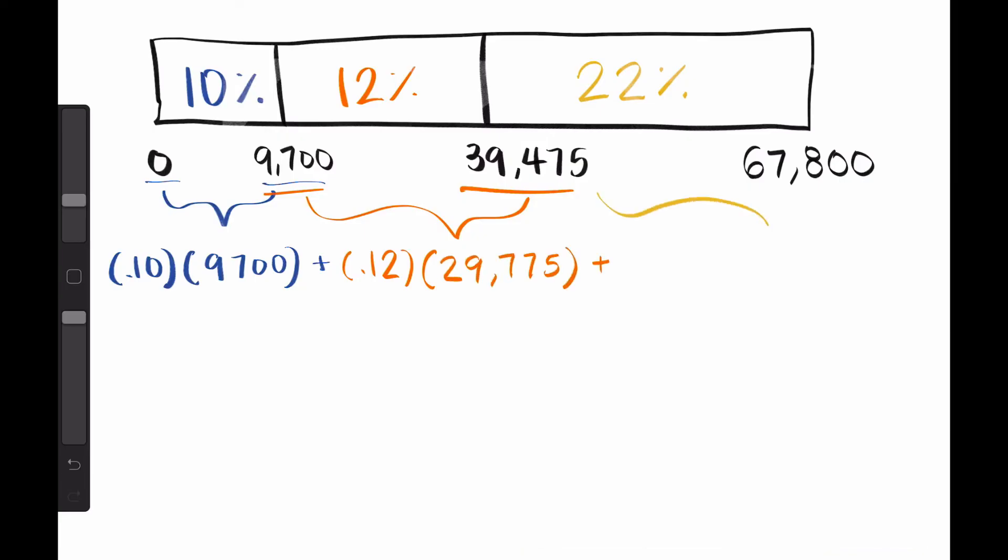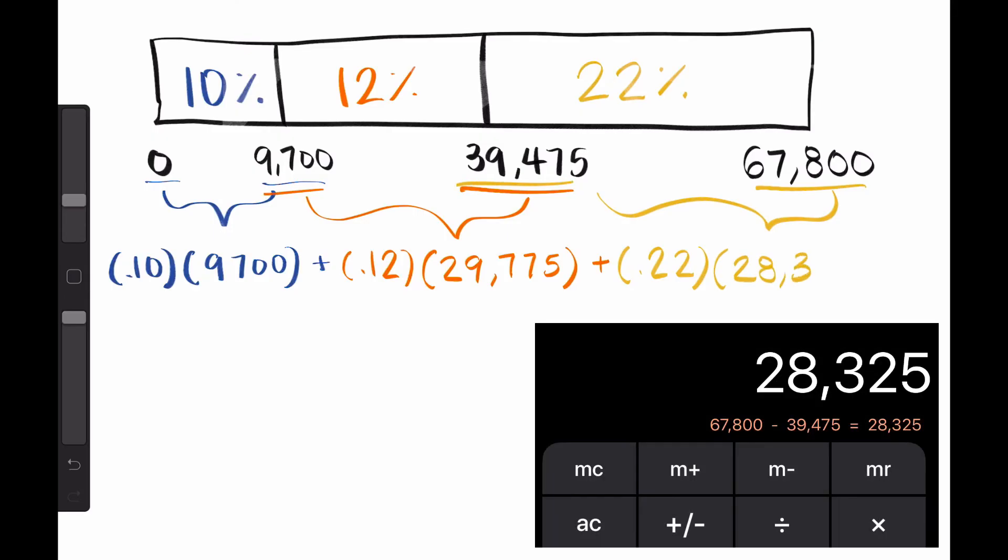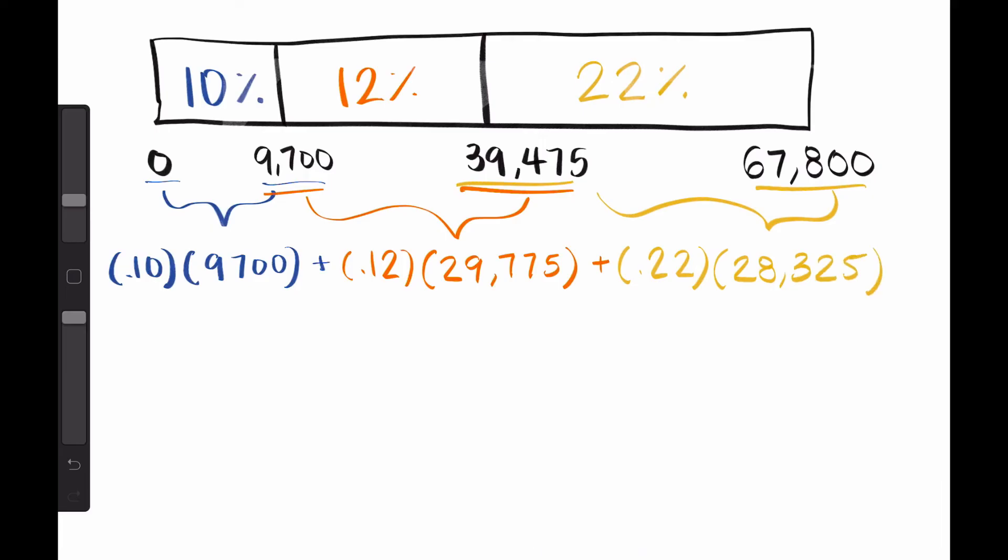The last portion can be written as .22 times the difference in the bracket, 67,800 minus 39,475, which equals 28,325.